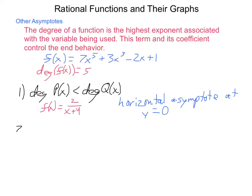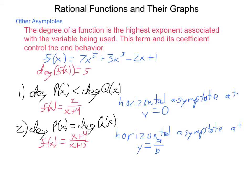Second situation: what happens if the degree of p of x is equal to the degree of q of x? An example would be if f of x equals x plus 4 divided by x plus 15. This will result in a horizontal asymptote at the value of y equals a over b, where a and b are the lead coefficients of our function. We have 1x plus 4 divided by 1x plus 15, so our horizontal asymptote will occur at the fraction 1 divided by 1, which is simply 1.